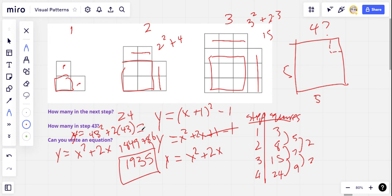So how did that go for you? Did you get 24 for step four? Were you able to get how many in step 43? Let me know. Thanks, everybody.